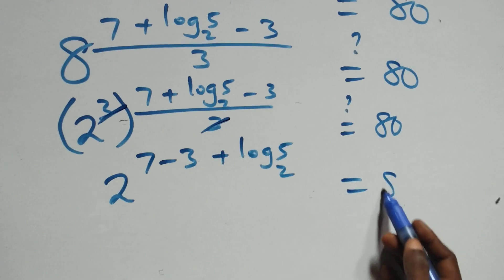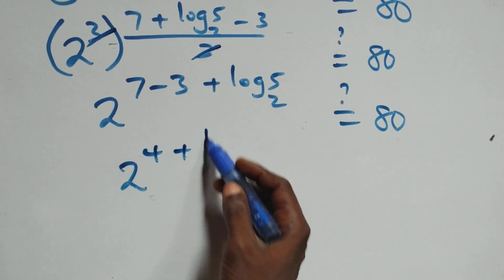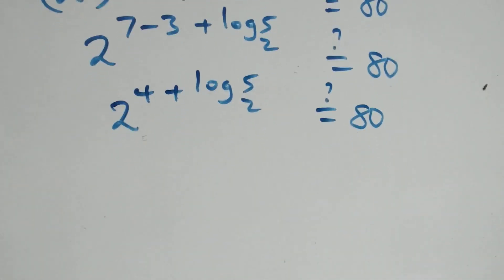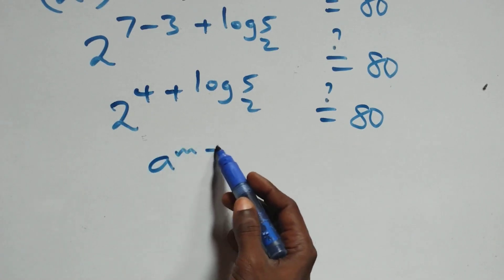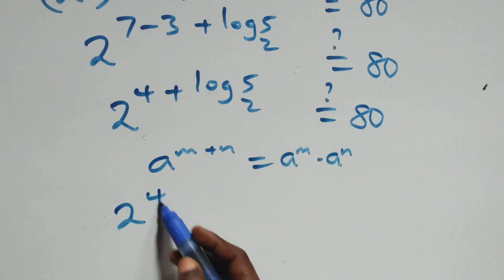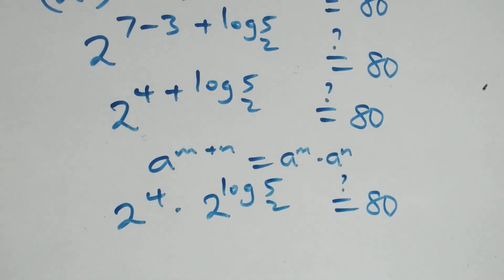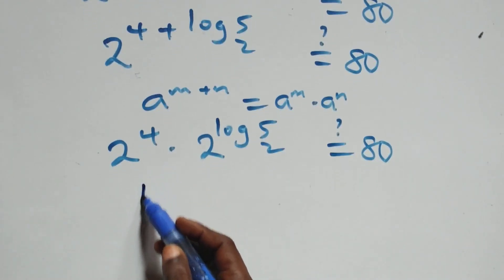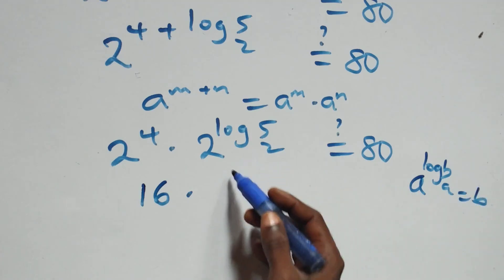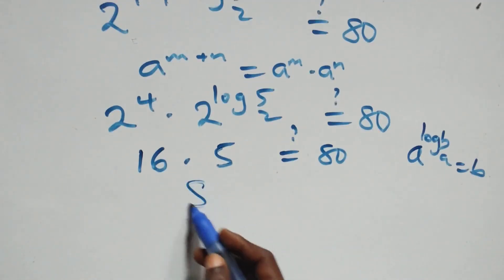So 7 minus 3 equals 4, giving 2 raised to power (4 + log₂5). This equals 2 raised to power 4 times 2 raised to power log₂5. Using the identity a raised to power log base a of b equals b, we get 16 times 5, which equals 80. So the left-hand side equals the right-hand side — verified.